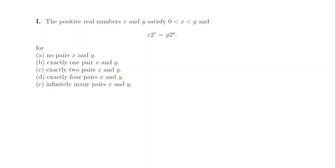1i. Both x and 2 to the x are strictly increasing, so x times 2 to the x is a strictly increasing function of x. That means there are no solutions with x less than y to this equation, and the answer is a.